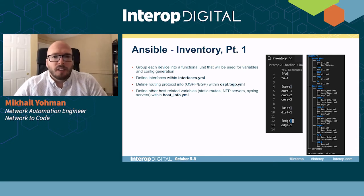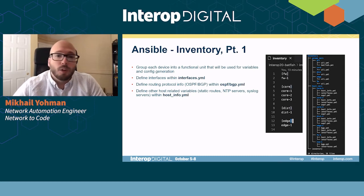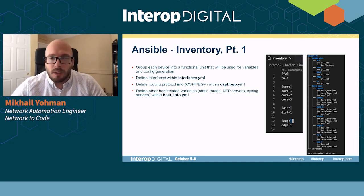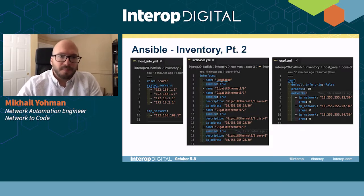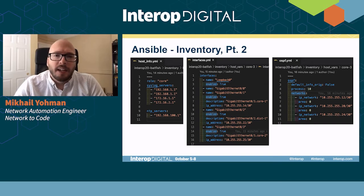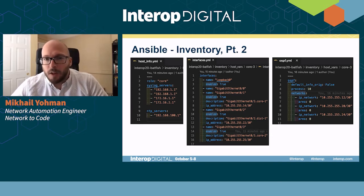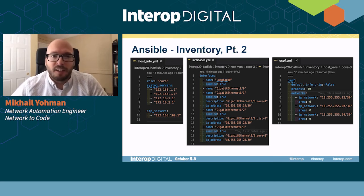We'll take a look at some of the inventory for Ansible. We have our hosts broken down into their roles — firewall, core, distribution, and edge. Within our folder structure, we have some host vars that contain our routing protocol information, syslog servers, and our interfaces. If we take a look at these files, we can see it's pretty basic, nothing complicated. Production might have a lot more options for your interfaces, and your OSPF or routing protocols is probably going to be a lot more involved, but these are simple things for our demo.